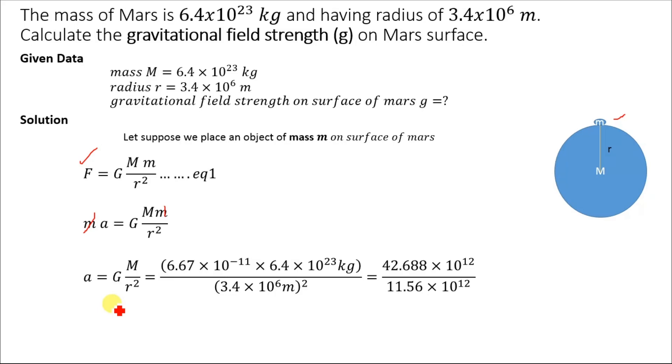Now solving these equations, we will get a is equal to g is equal to 3.69 meters per second squared. And this is the value of g on the surface of Mars. The gravitational field strength on the surface of Mars is equal to 3.69 meters per second squared, or newtons per kilogram.